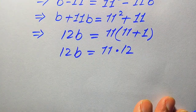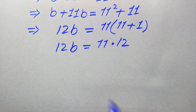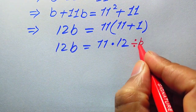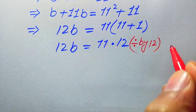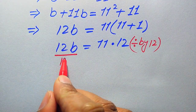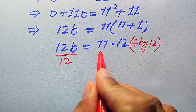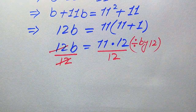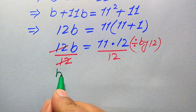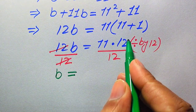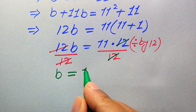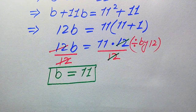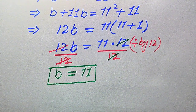So we have 12b equals 11 multiplied by 12. Our target is to find the value of b, so we divide both sides by 12. The 12s cancel on both sides, and we get b equals 11. In this first method we obtain only one value of b, which is 11.